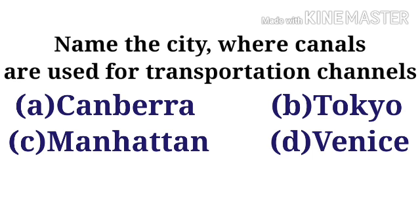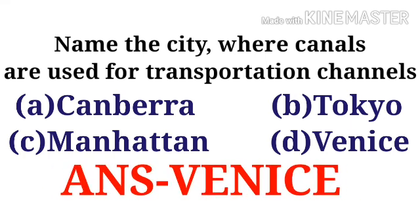The options are: option A: Canberra, option B: Tokyo, option C: Manhattan, option D: Venice. The correct option is option D, Venice.